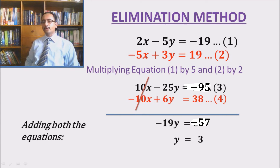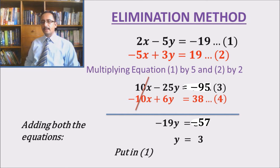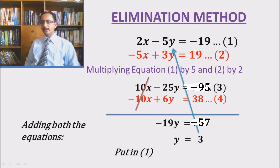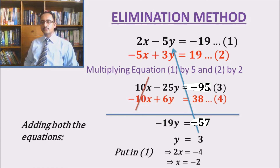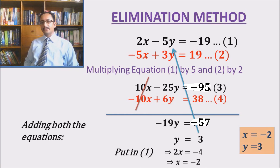To find the value of x, we substitute y equals to 3 in equation number 1 and get 2x minus 15 equals to minus 19. Shifting minus 15 to the right-hand side we get 2x equals to minus 4. Dividing both sides by 2, x equals to minus 2. So the solution set of this pair of linear equations is (minus 2, 3).